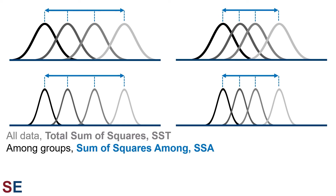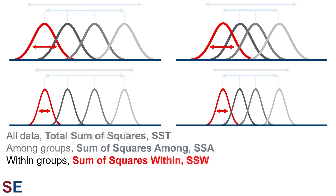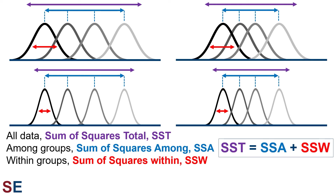Focusing on the variation coming from the means of the groups, we calculate the sum of squares among (SSA) — a sum of squares based on the group means compared to the overall mean, weighted by the number of values in each group. Focusing on variation within the groups, we calculate the sum of squares within (SSW) — the sum of squares for each group compared to its own group mean, all added up. There is a mathematical proof that the SST equals SSA plus SSW. This useful property is the main reason why so much of statistics is done using sums of squares and variances.